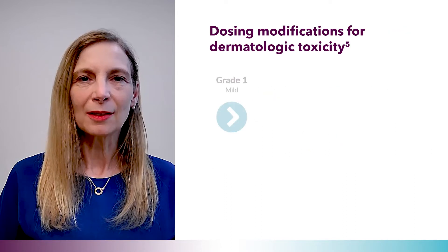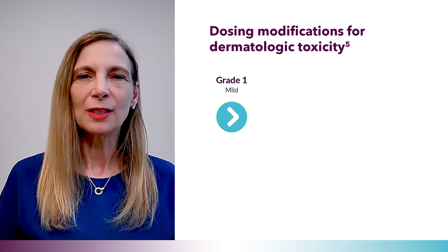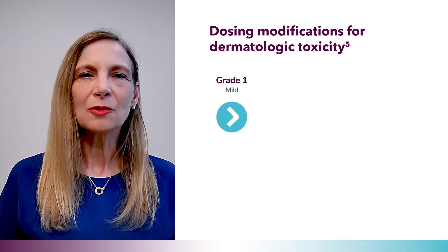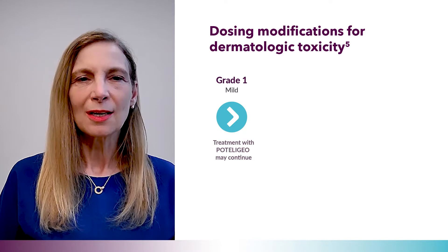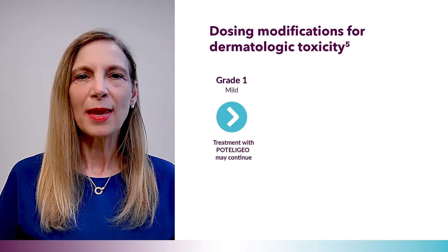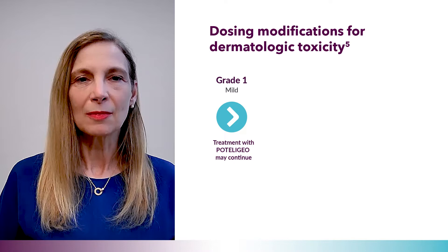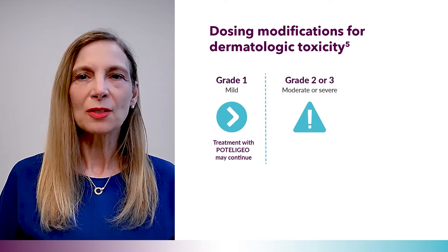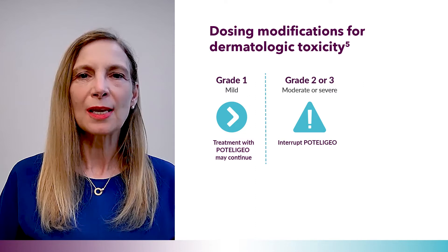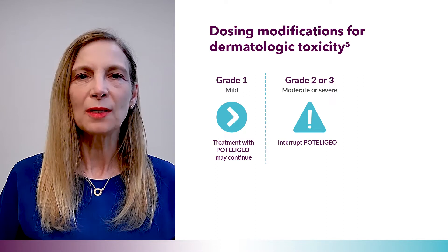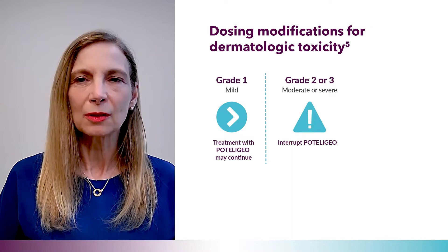If a mild or grade 1 rash occurs, including drug eruption, consider treating it with topical corticosteroids. Treatment with Poteligio may continue during that time. However, if rash is moderate or severe — grade 2 or 3 — interrupt Poteligio and administer at least two weeks of topical corticosteroids.